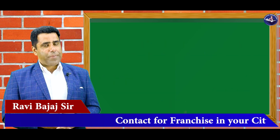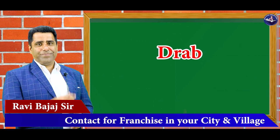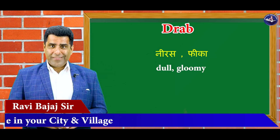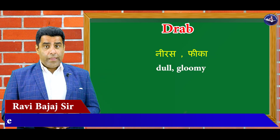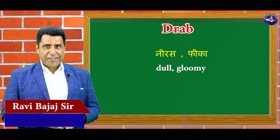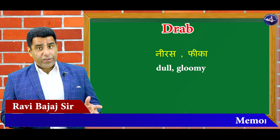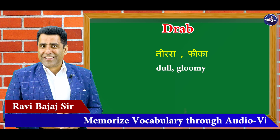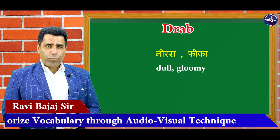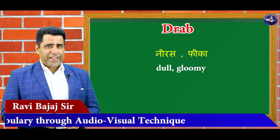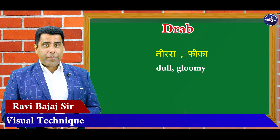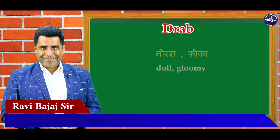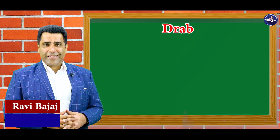Toh dekhaiye, aaj ka hamara pehla word hai — drab. Drab ka meaning hota hai neeras ya fika. Dull and boring. Gloomy bhi kehte hai. Toh ye kapde bhi ho sakte hai, jokes bhi ho sakte hai aur baatein bhi ho sakti hai — neeras and boring. Toh drab mein hume ek bahut bada word dikhayi de raha hai jo humara link word hai — drab mein hai 'rab', rab yani ki bhagwan.